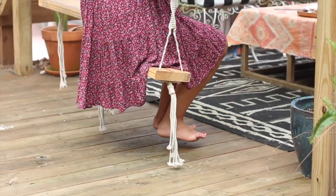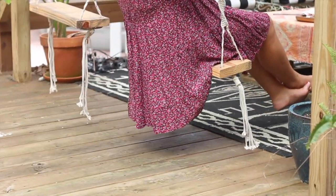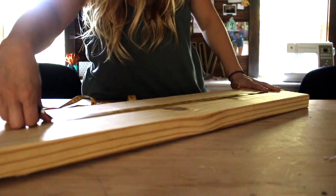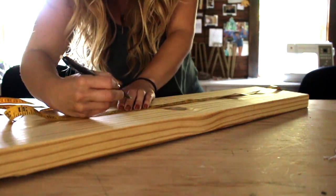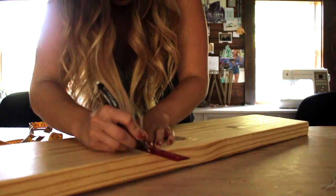Today we're going to be showing you how to make this macrame swing. Measure your wood to 24 inches. You can make your swing seats as wide or as narrow as you'd like, but 24 inches seems to be pretty universal for adults and children.